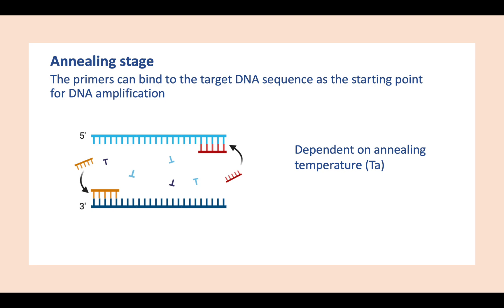This binding is possible because of the annealing temperature present at this particular stage. The annealing temperature is the temperature used in the annealing step of a PCR reaction, and it is dependent on what is called the melting temperature of the primer. In conventional PCR, the annealing temperature is usually lower than the melting temperature in order to allow the primers to bind to the template DNA and also to avoid any non-specific binding.